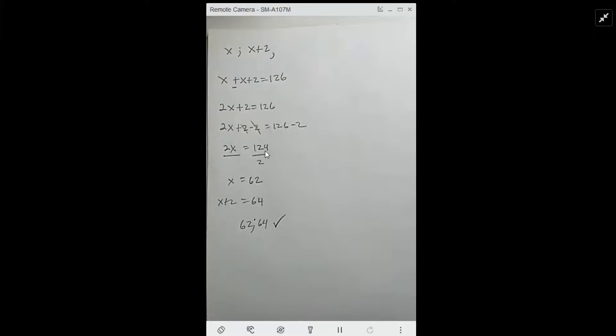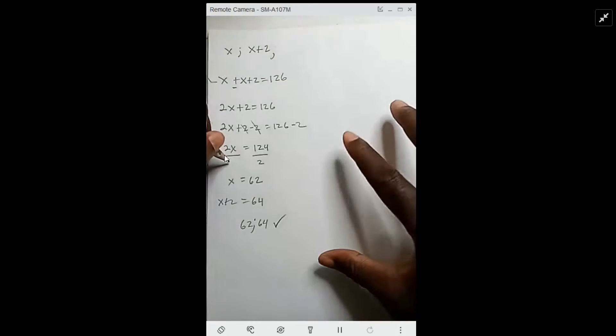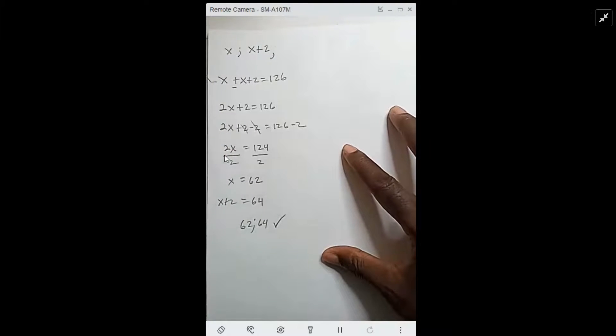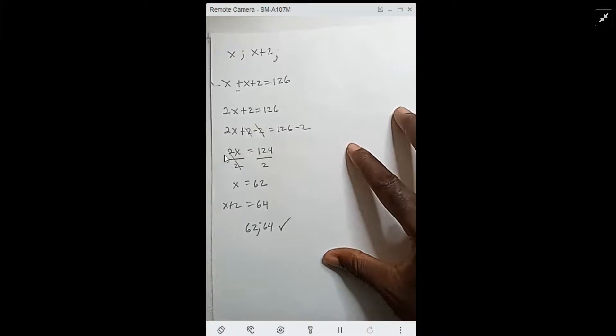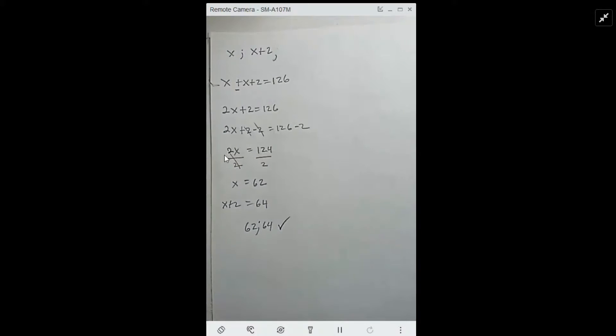We divide both sides by 2. The terms cancel on the left side, leaving us x equals 62. So that means 124 divided by 2 is 62.